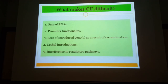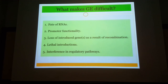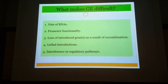Sometimes promoters may not be functional — for instance, a promoter selected from rice may not function in tomato. You need to identify promoter compatibility using a plant promoter database. Another issue is that when you insert your cassette, genes may be lost as a result of recombination.